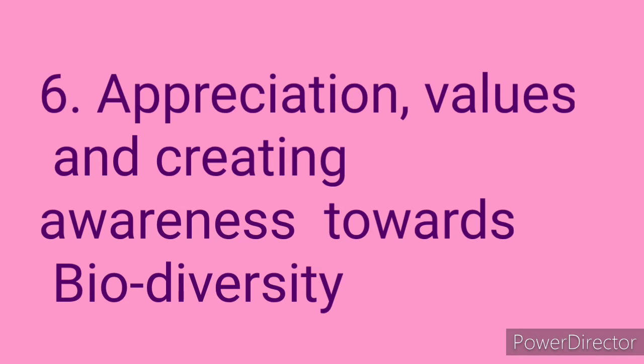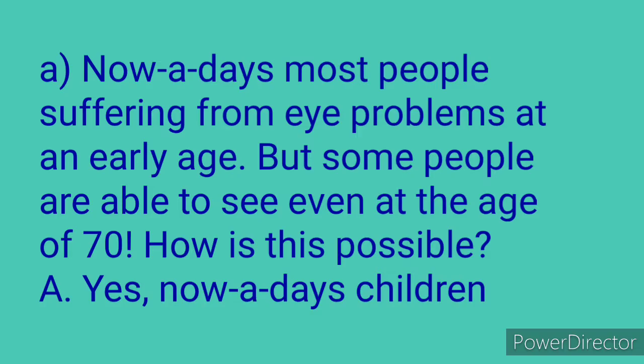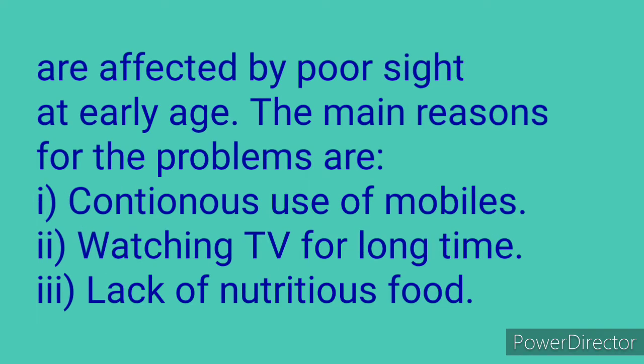Activity A: nowadays most people are suffering from eye problems at an early age, but some people are able to see even at the age of 70 — how is this possible? Answer: yes, nowadays children are affected by poor sight at an early age. The main reasons are: first, continuous use of mobiles; second, watching TV for a long time; third, lack of nutritious food.